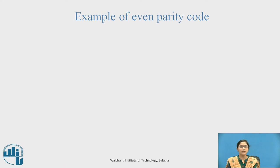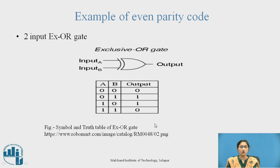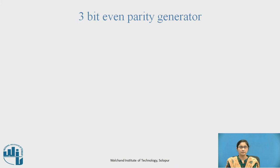An example of Even Parity Code is the two-input XOR gate. This is the symbol and truth table of the XOR gate. When inputs A and B are considered with the output, in the total code, if the count of 1 is even, it is known as Even Parity Code. For each combination, the count of 1 is even, so the two-input XOR gate is an example of Even Parity Code.